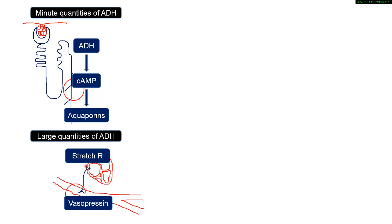The posterior pituitary then releases ADH into the circulation. It travels to the blood vessels and acts as vasopressin, causing vasoconstriction to restore blood pressure. Low blood volume leads to low blood pressure, so the body must restore it to normal: low blood volume → no stretch receptor stimulation → no inhibition of ADH → ADH released → vasoconstriction → blood pressure restored.